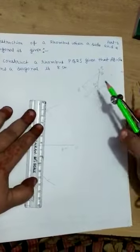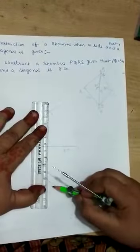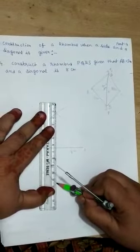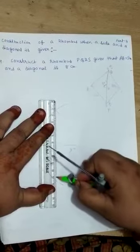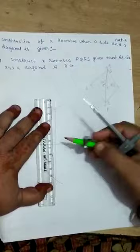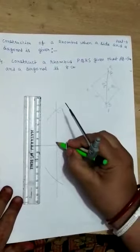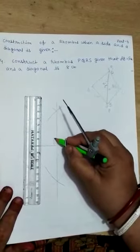Now, you join these two intersecting arcs. This is 90 degree.